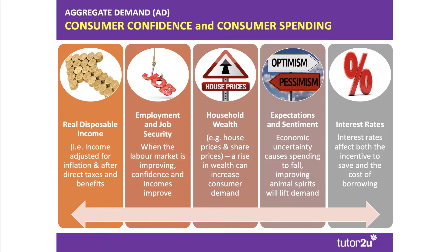This slide provides a helpful summary of five key factors. Keynesians would talk about real disposable incomes as being important — that's income after direct taxes and benefits, adjusted for the effects of inflation. Many people's spending power and willingness to commit to spending is determined by whether they have a full-time or part-time job and the sense that their job is secure and their monthly income is predictable.